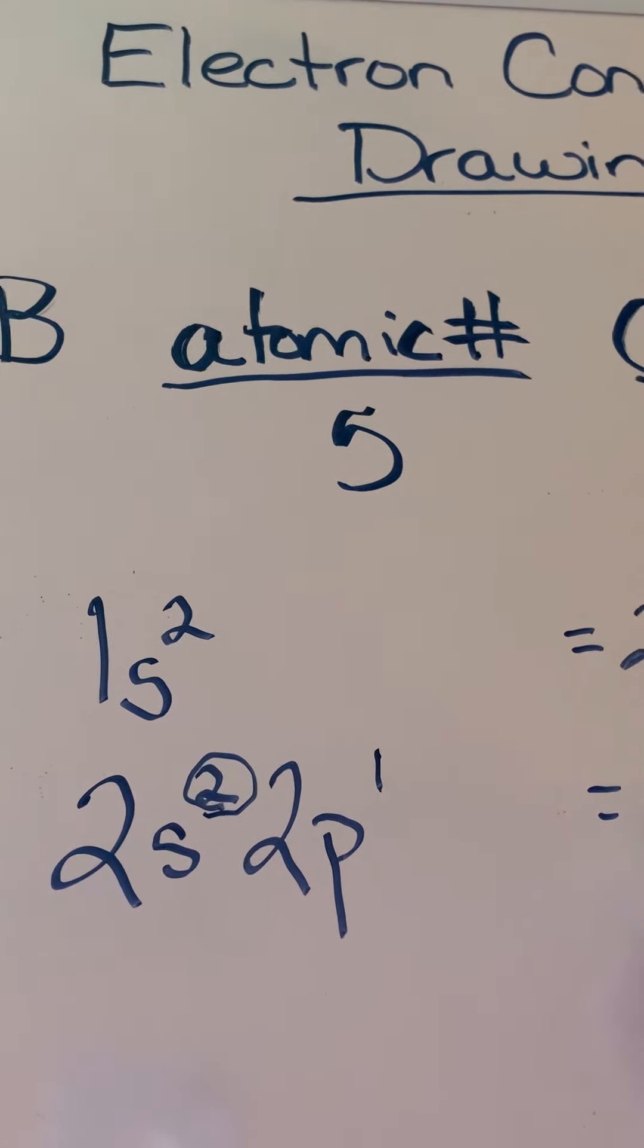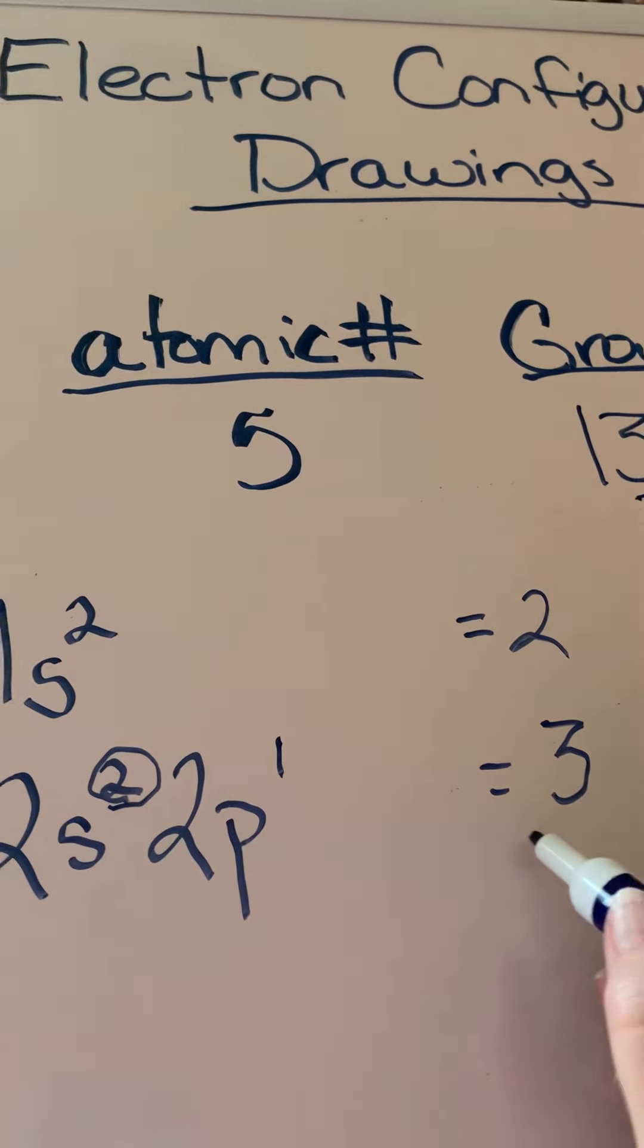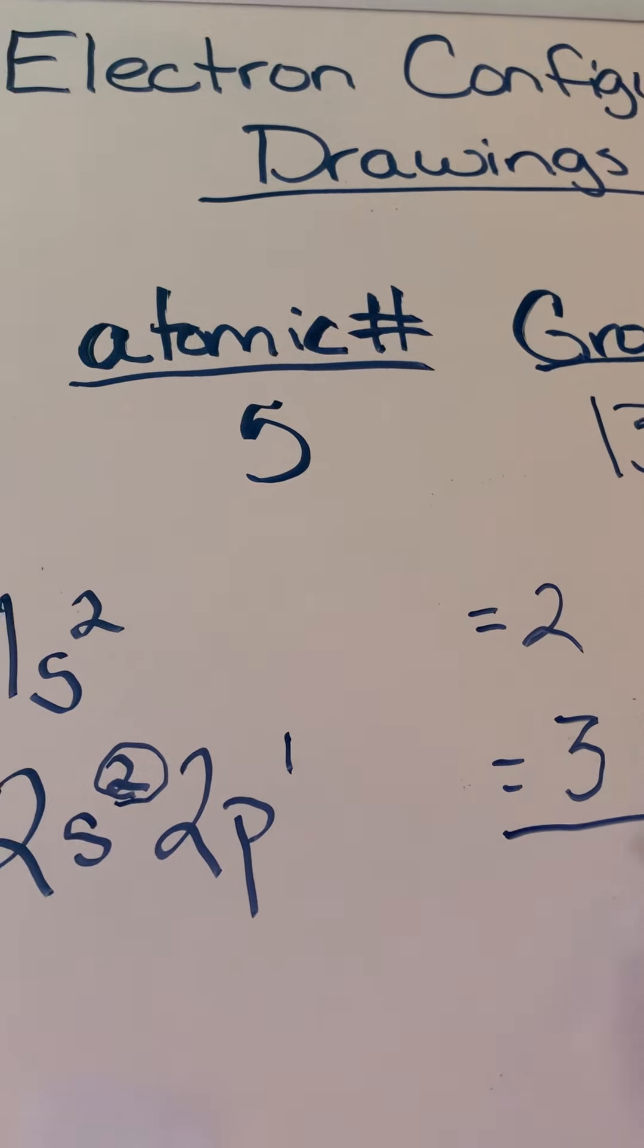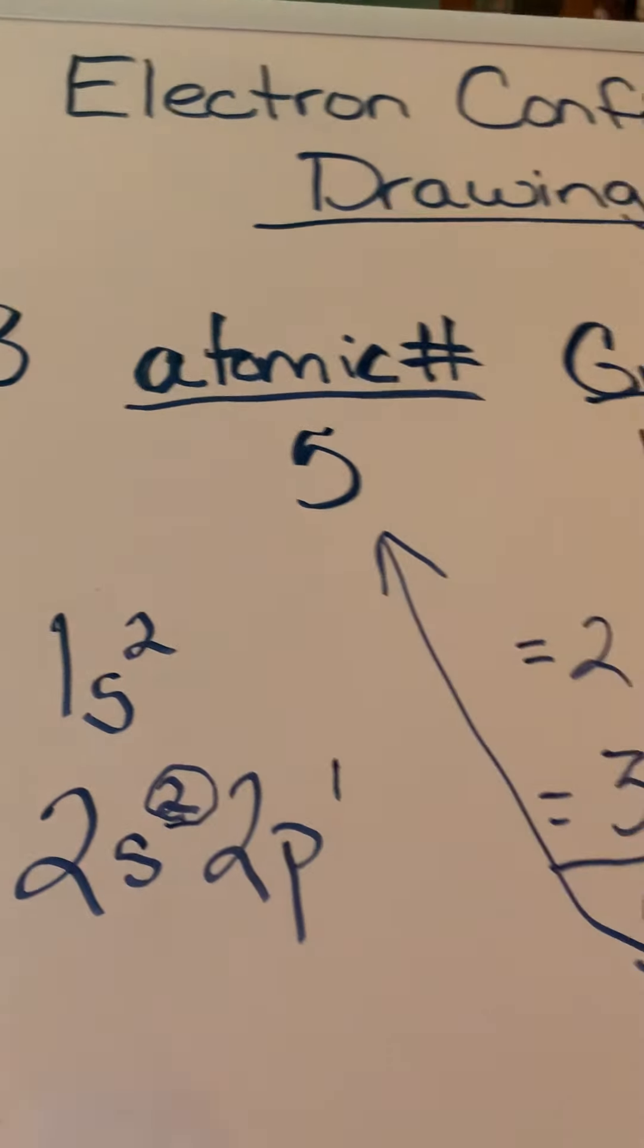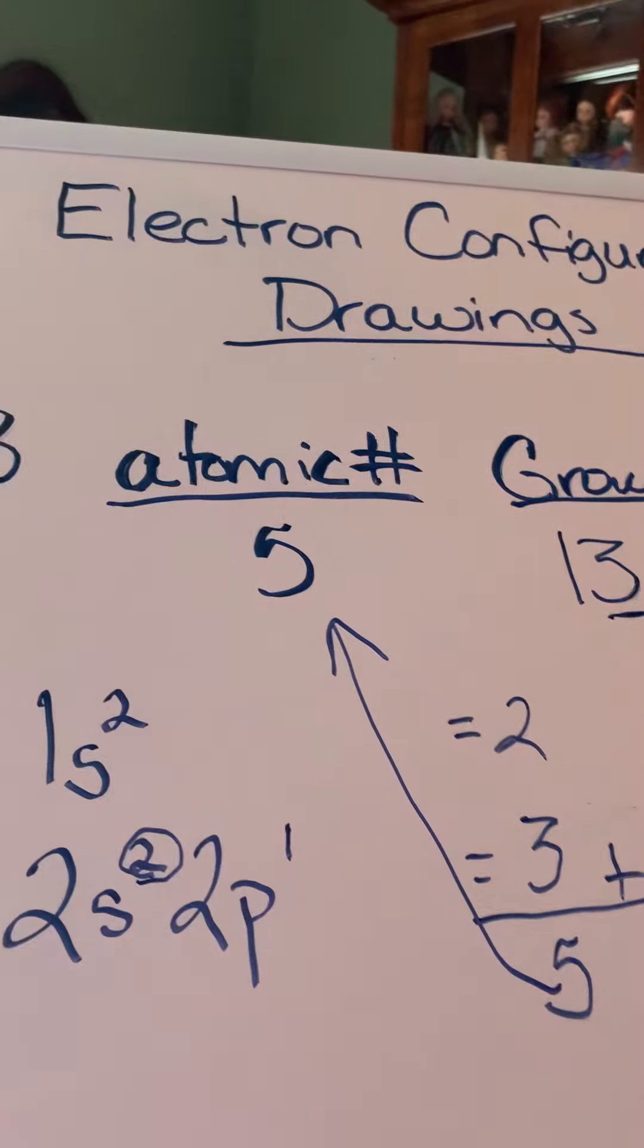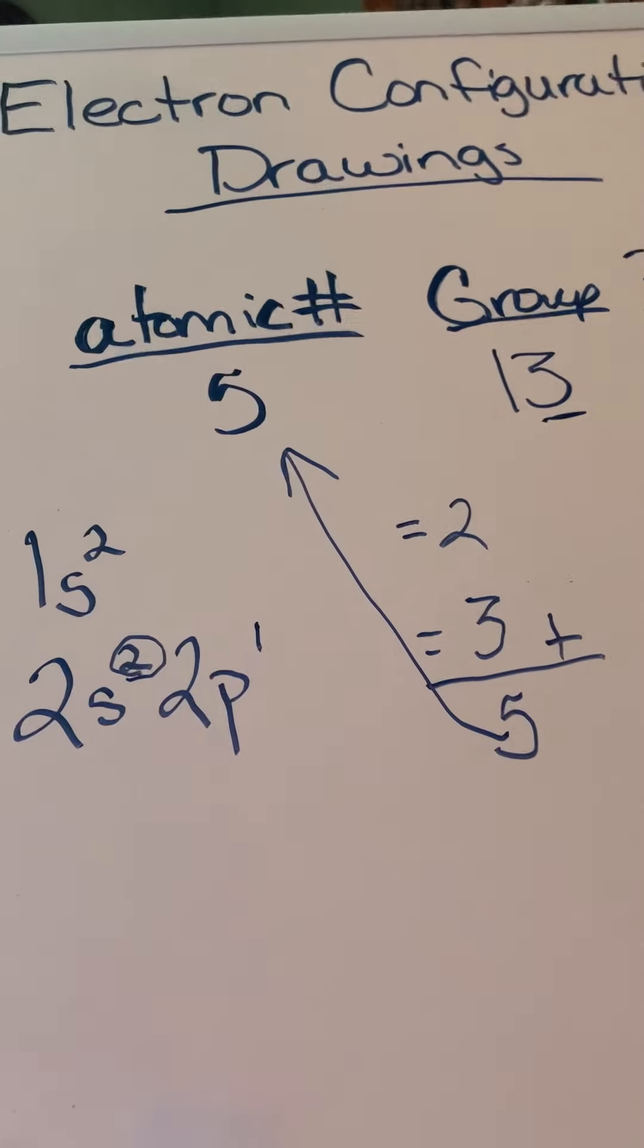On level two I have a grand total of three electrons. And I'm finished. So when I add those up, I get five. Did that match my atomic number? Oh wow, yes it did. We did a great job. Look at us go.